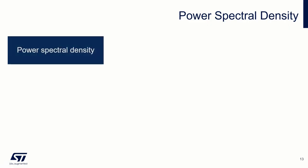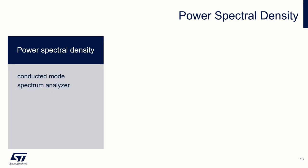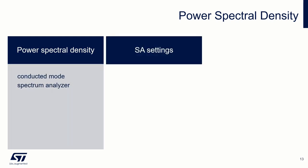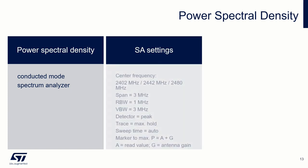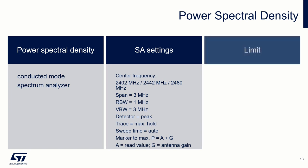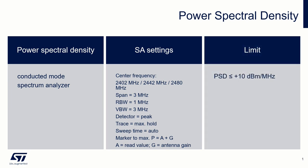The next step is power spectral density. We will use a spectrum analyzer and measure in conducted mode. Measurements are again performed on three channels. The marker shows the spectral density in 1 MHz, but we need to add cable loss and antenna gain to get the EIRP value, then compare with the limit of 10 dBm over MHz.